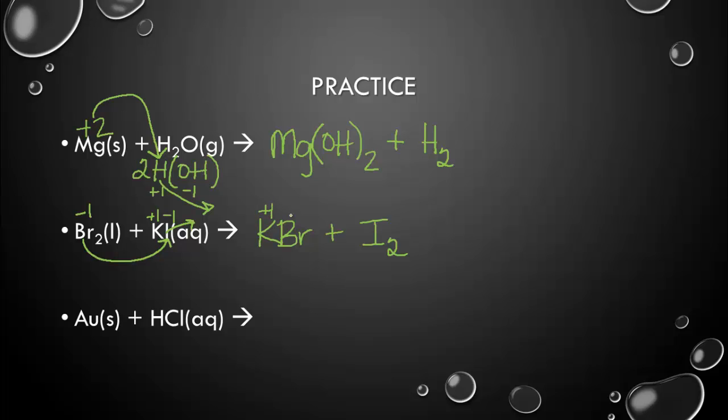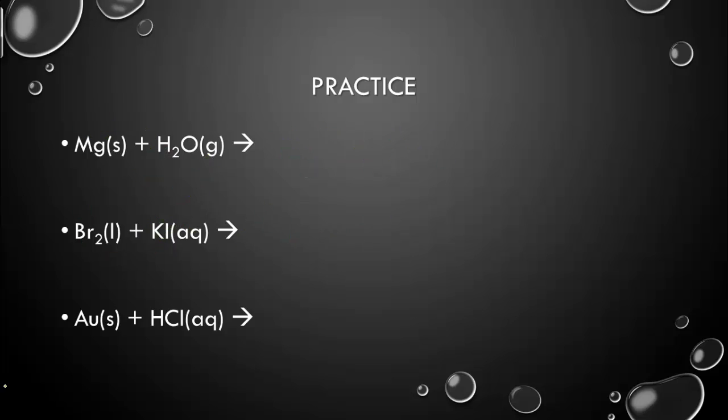Now you'll see we didn't bring the 2 over from the Br when we made it. We looked again at charges. So positive 1, negative 1, there's no crisscrossing, so you wouldn't bring the 2. The 2 is only because bromine is by itself. We fix that then by balancing this equation. So I would put 2 to balance out my Br's. That gave me 2 K's, so then I would need a 2 in front of that K. And then my I's will balance out also.